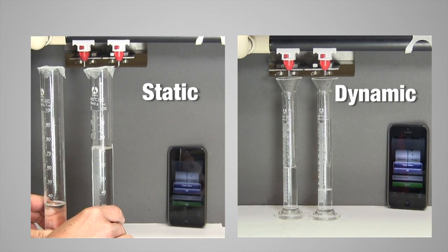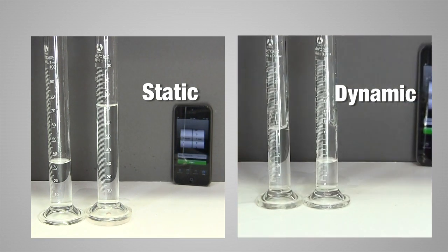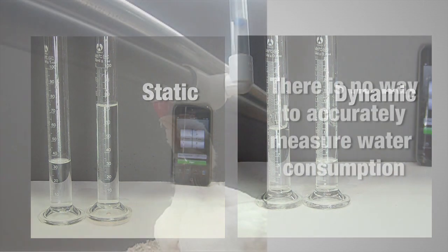But most importantly, static flow rates should not be used to determine watering system pressure settings. Using these standards will more likely result in delivering too much or too little water for optimum bird performance.